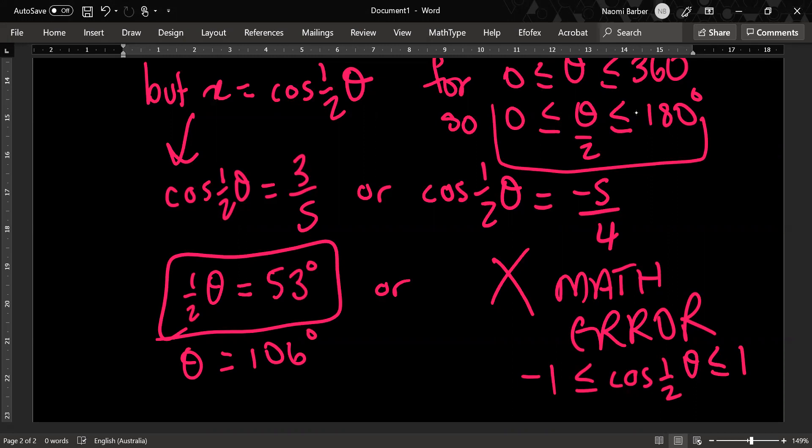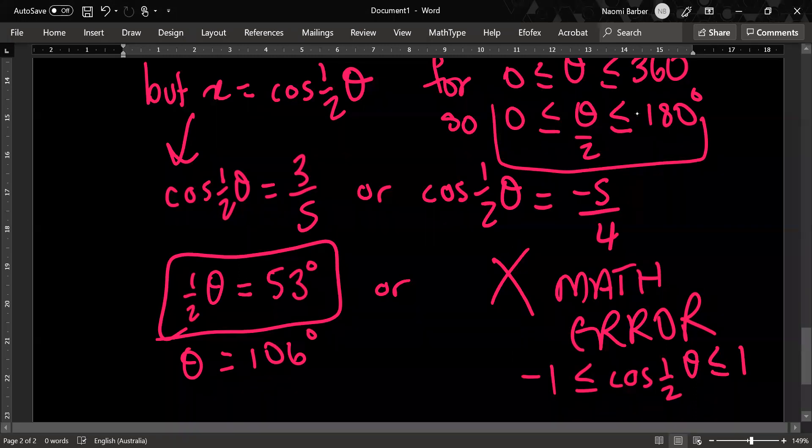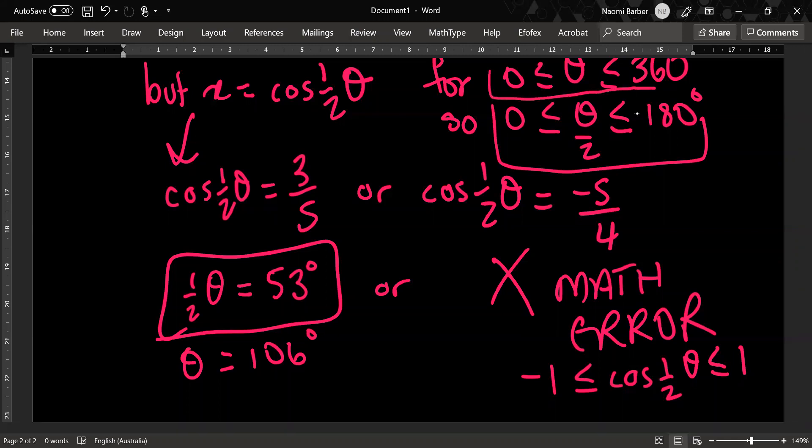And that is within the allowable original domain of 0 is less than or equal to theta is less than or equal to 360. Now, the reason that I did not do half theta is also equal to 360 minus 53 is because my modified domain only went up to 180.